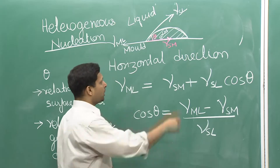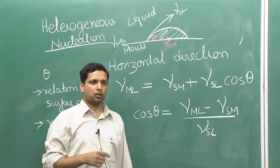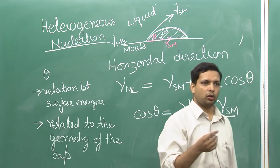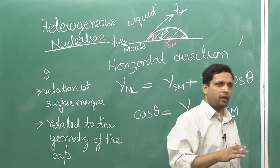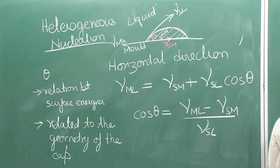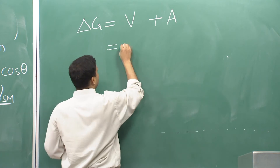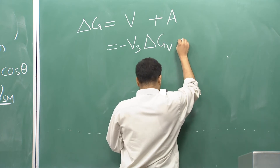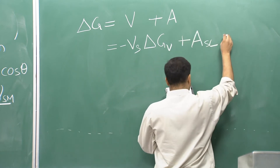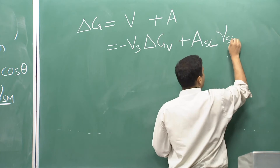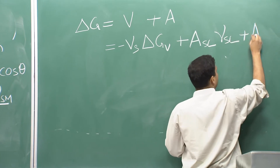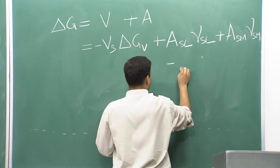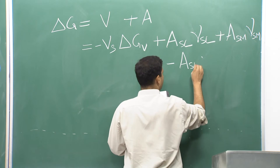But here we have also gotten rid of some surface area, so the energy associated with that area has been taken off. That will also reduce the overall free energy, and therefore we will get an equation of this form.